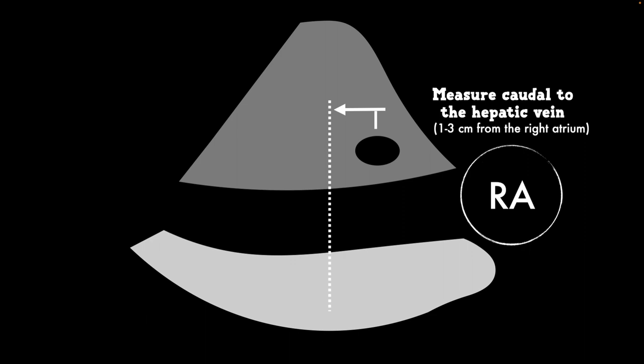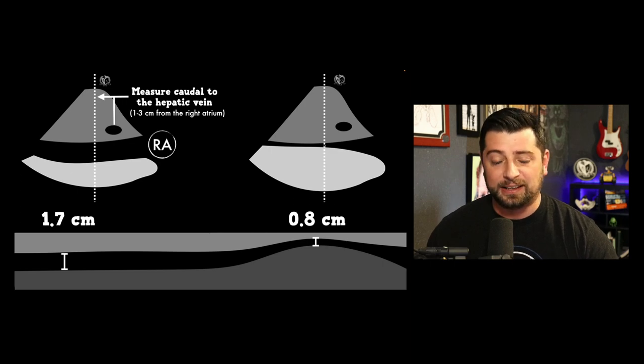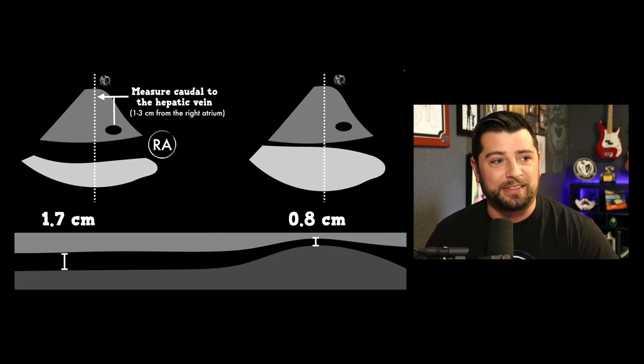You can actually measure the collapsibility by dropping an M-line — a motion line — down the middle of the IVC and tracing it. You'll see its widest diameter and narrowest diameter, giving you an objective measure of collapsibility. Most people do it subjectively though — they look at it, see it collapsing, and say the right atrial pressure is probably not super high in this patient and a little bit of fluid probably wouldn't hurt them.